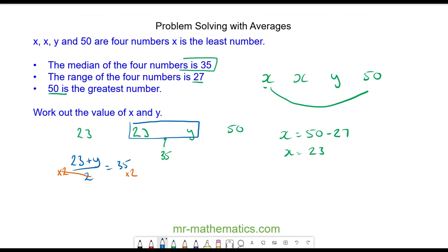So we have 23 plus y will equal 70. We take away 23 from both sides, so y is equal to 47. So x equals 23 and y is equal to 47.